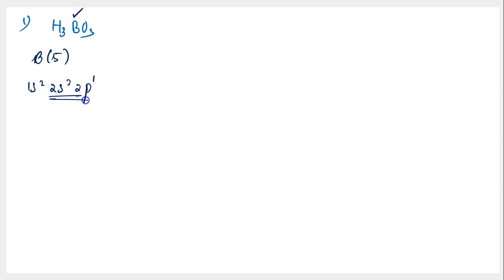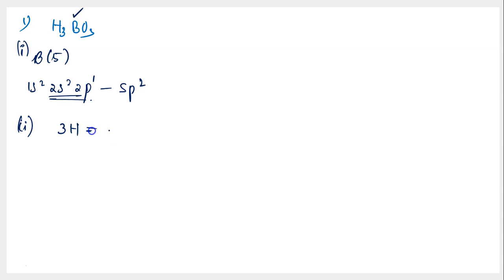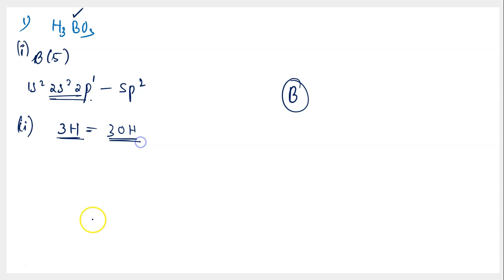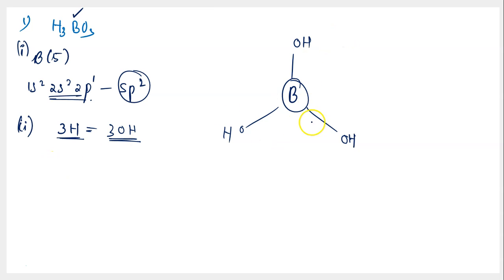Boron has three electrons in its valence shell, so the maximum number of bonds expected is three, giving sp² hybridization. Rule number two: there are three hydrogen atoms in H₃BO₃, which equals three hydroxy groups. To draw the structure, place boron at the center and attach three hydroxy (OH) groups. Since it is sp² hybridization, you can draw the structure in a trigonal planar shape. This is how boric acid looks.